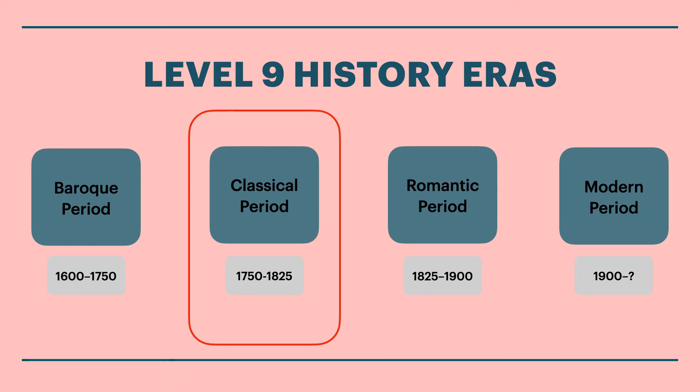We're dealing with the Classical period, so we're looking at around 1750 to 1825. As usual, these dates are only approximate. There's a great deal of fluidity between when the Baroque period becomes classical, becomes romantic, becomes modern. So make note in your exam, or at least consider making that note, that these dates really are just approximate.